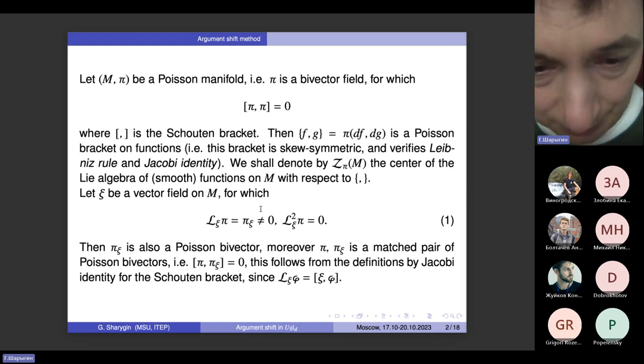Let psi be a vector field on M which verifies the condition written in condition 1. The first Lie derivative of pi along psi does not vanish—it can vanish, but we don't need this, we actually would prefer it not to vanish. But the second Lie derivative of pi with respect to psi vanishes identically. One can show that in this case, pi sub psi, the Lie derivative of pi, will also be a Poisson bivector, and it will be compatible with the original Poisson bivector pi.